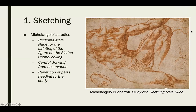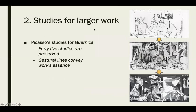For studies toward a larger work, here is Picasso's Guernica — one of the probably most famous artworks in the world. There are 45 preserved studies done in preparation for Guernica. Some are simply mapping out elements and how they'll fit on the canvas. Very early studies show you can barely tell what it'll be. A midway study shows values being placed and subject matter being finished. Then the final product.